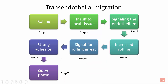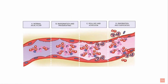Transendothelial migration is a sequential process involving first rolling of the leukocytes, followed by insult to the local tissues, then increased rolling, after which signals are sent to the endothelium to cause rolling arrest. Rolling arrest is followed by strong adhesion and finally the zipper phase. This diagram shows the normal flow of RBCs and WBCs, followed by margination and pavementing, rolling and adhesion, and finally extravasation of leukocytes into the tissues.